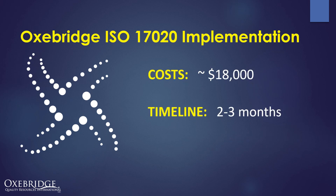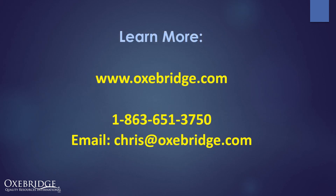We estimate the costs at about $18,000, which could be a little more for very large organizations and less for very small C3PAOs. The timeline is about three months, but can be done in two months if everyone pushes hard. For more information, visit Oxbridge.com or call 1-863-651-3750. You can also email Chris at Oxbridge.com for a quote or more information on how to get ISO 17020 accredited to operate as a CMMC C3PAO.